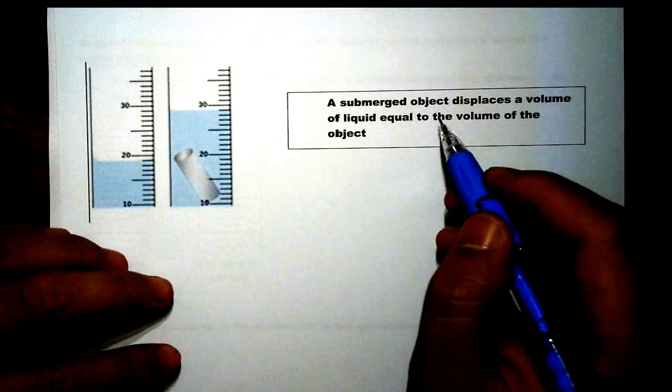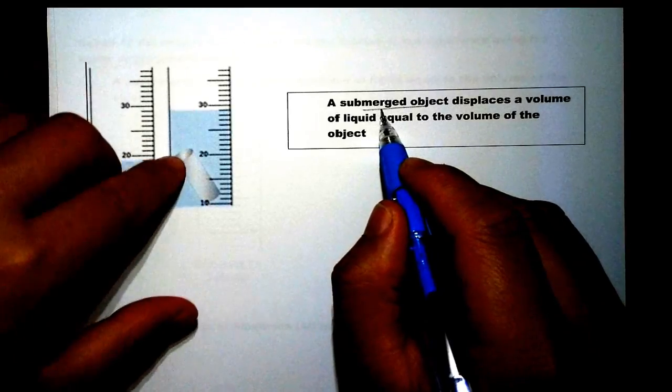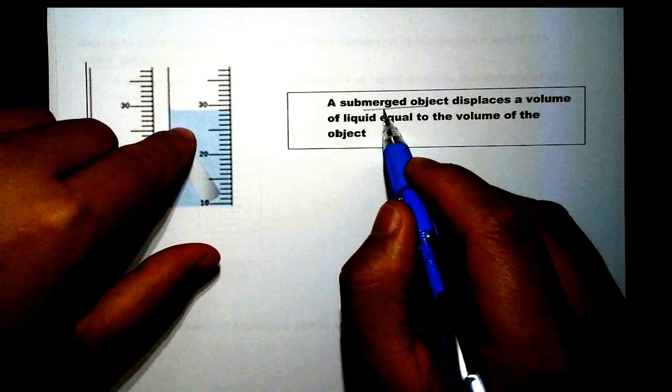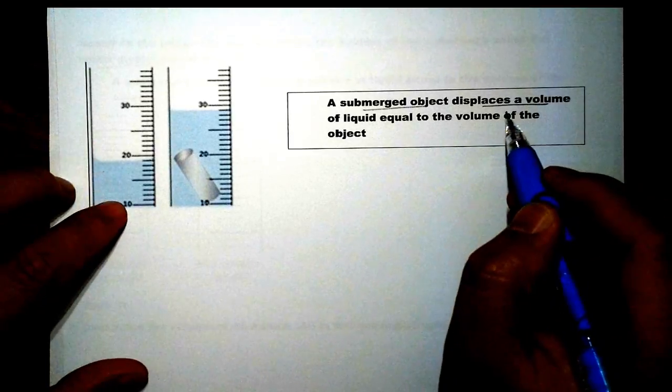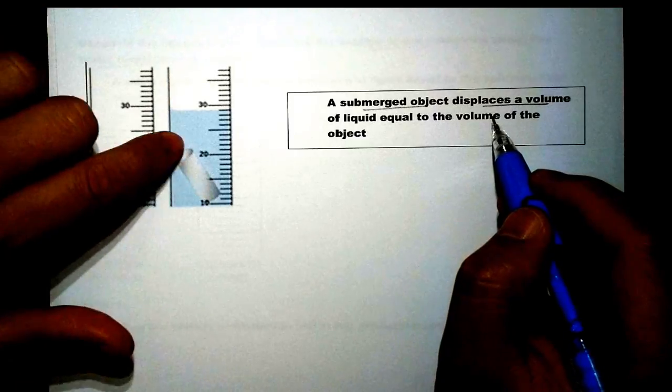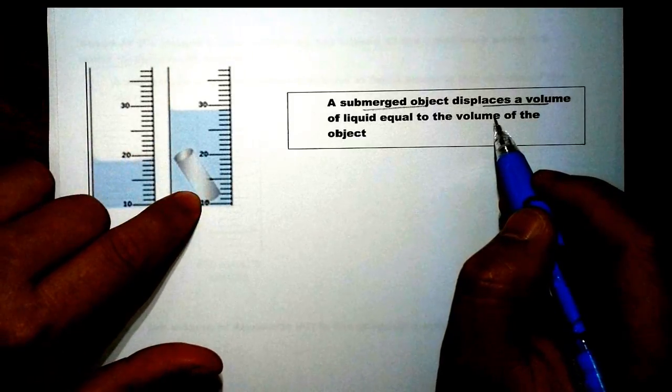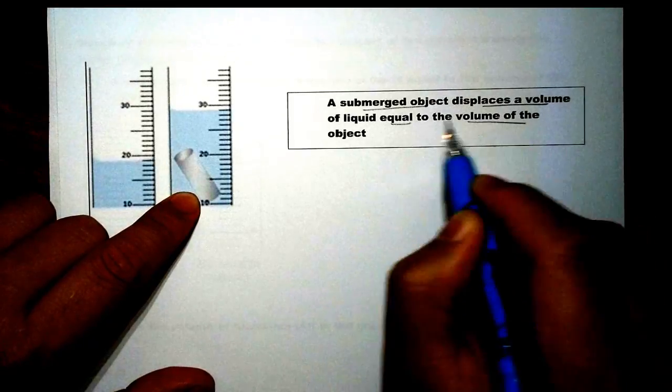So let's go back to the definition again. In this case, the submerged does mean it has sunk all the way and submerged by the liquid, in this case water. It displaces the volume which we see right there. It pushes the water up because this object has volume. So it will displace that volume right there, and that volume is equal to the volume of the object.